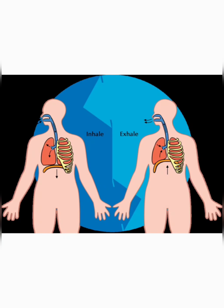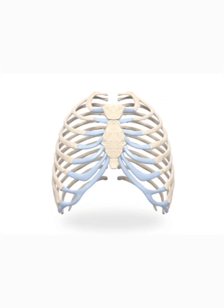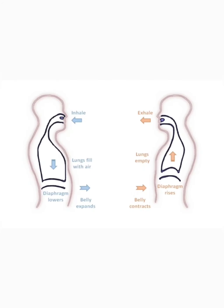Now let us learn about the mechanism of respiration. Respiration involves two processes: inhalation and exhalation. Ribs as well as the diaphragm also play a major role in respiration. Ribs play a major role in respiration in the case of women, whereas the diaphragm plays a major role in men. During inhalation the volume of the chest cavity increases and pressure decreases, because of which air from outside enters into the respiratory tract and finally reaches the alveoli. During exhalation the volume of the chest cavity decreases and pressure increases, causing air from inside the lungs to gush out into the atmosphere.